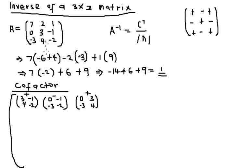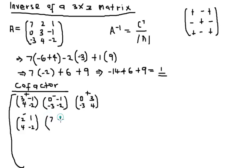Moving to the second row: for the first element we eliminate the row and column and are left with 2, 1, 4, minus 2. The sign here is negative. For the middle element: 7, 1, minus 3, minus 2 — the sign here is positive. For the last element of the second row: 7, 2, minus 3, 4 — the sign here is negative.